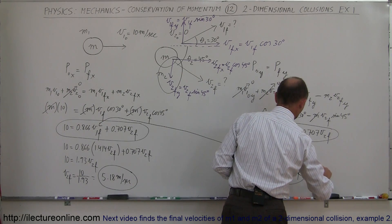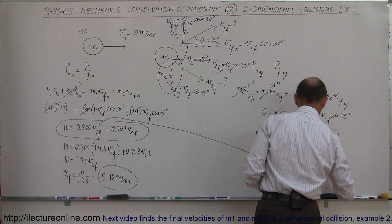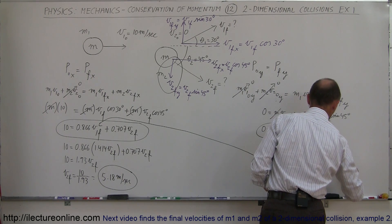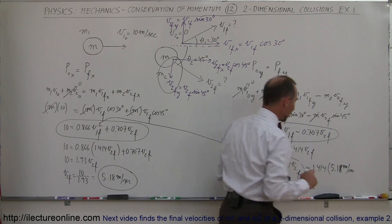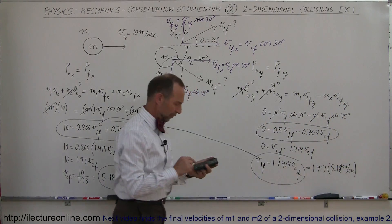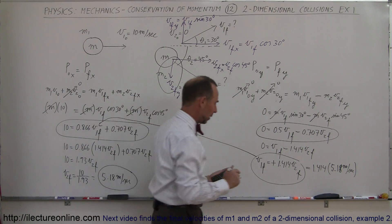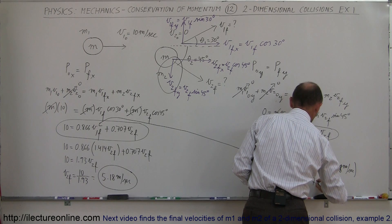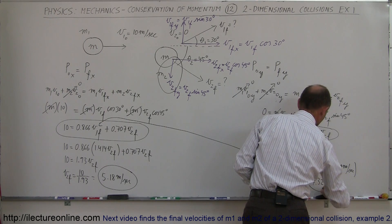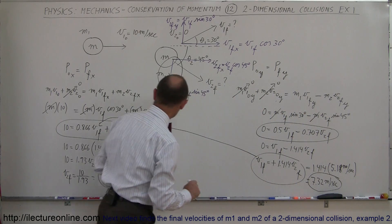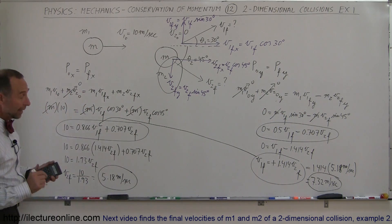Now we find v1_final, which equals 1.414 times v2_final, so 1.414 × 5.18 = 7.32 meters per second. So v1 final is 7.32 m/s and v2 final is 5.18 m/s.